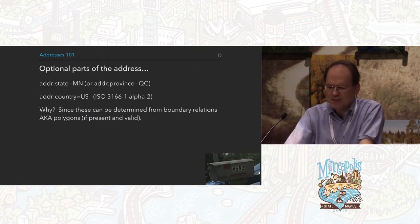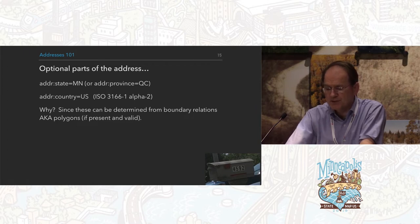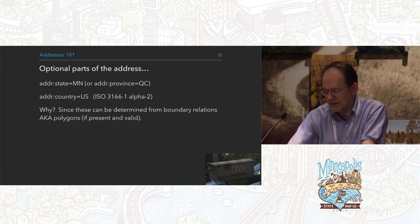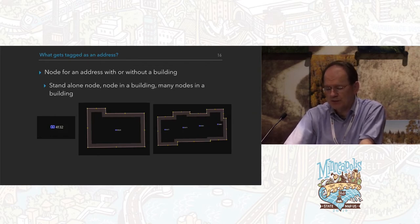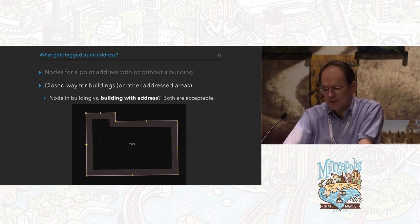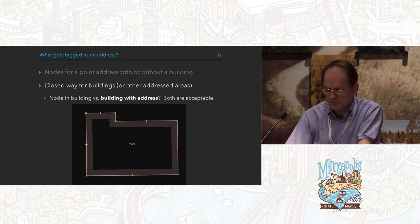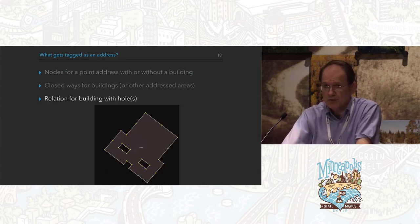Optional parts of the address: addr:state, addr:province in Canada, and addr:country are considered optional because people think you can do a spatial overlay using boundary relations. Not a big fan of this, but whatever. So what gets tagged as an address? Pretty much everything. You can have nodes, nodes within buildings, or multiple nodes within buildings. You can have a closed way or other addressed object. Do you put a node in a building, or is it better to have a building with an address? Both are acceptable — I prefer putting it on the way. And if you have a building with holes, you can have address information on the relation.